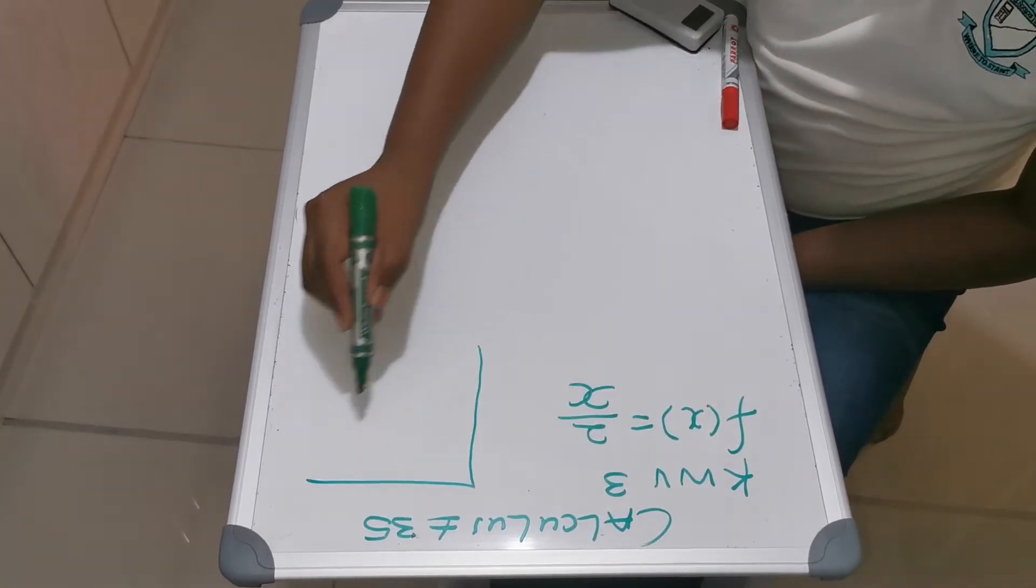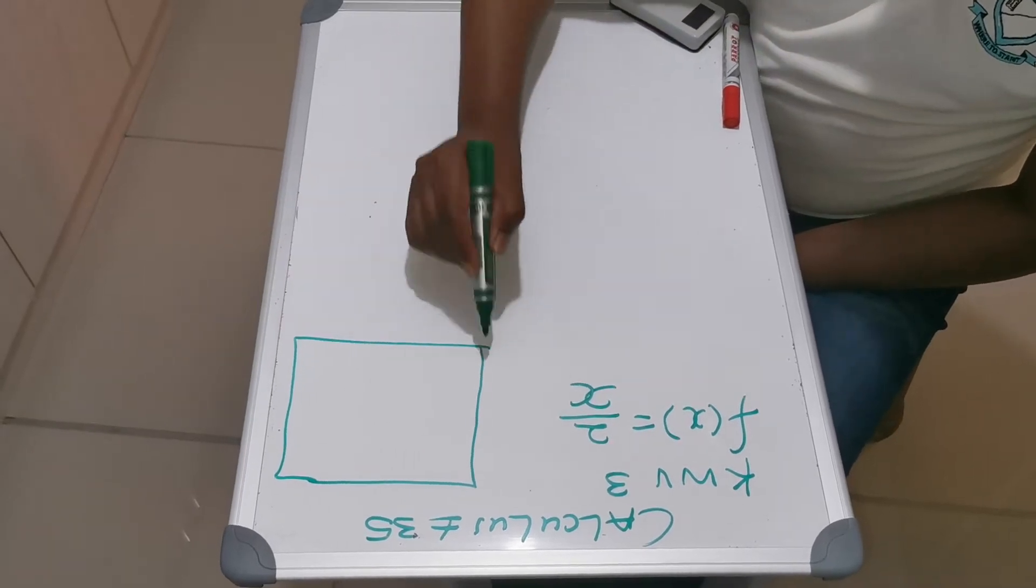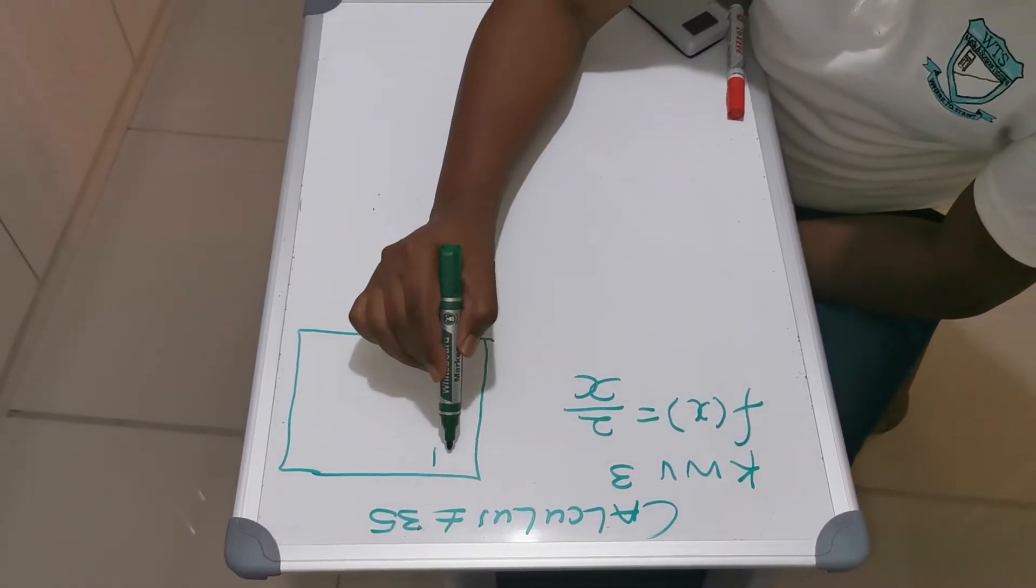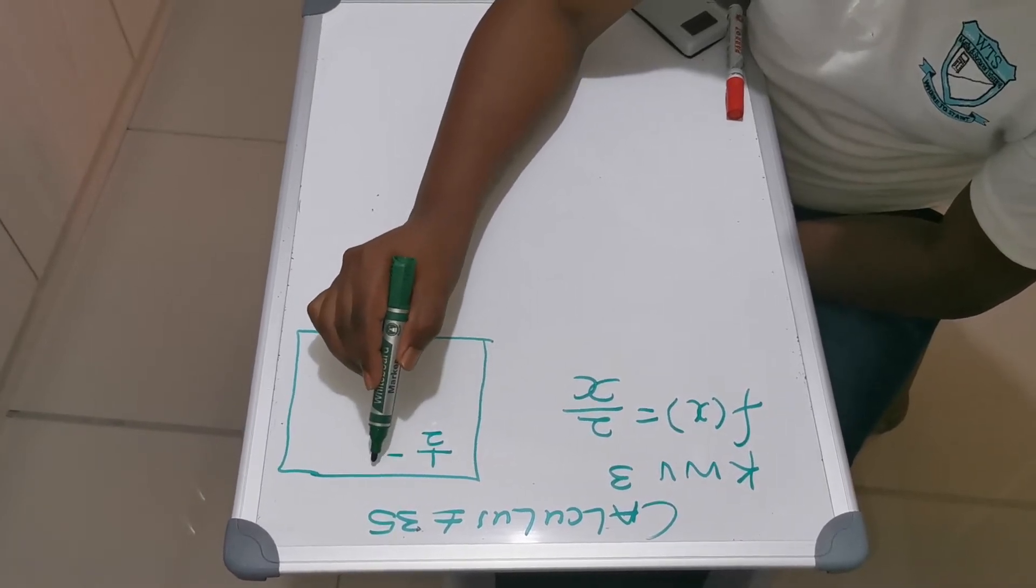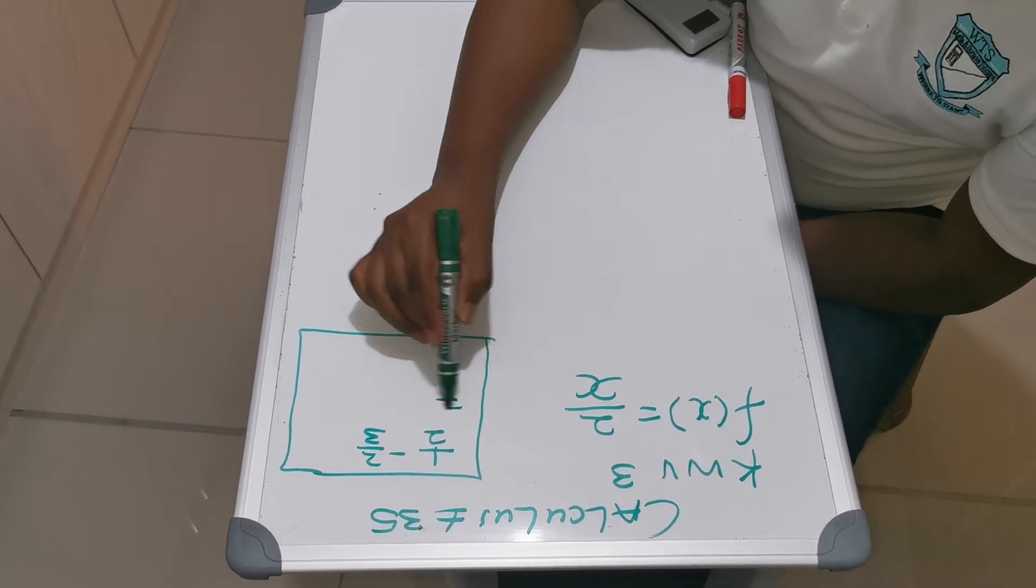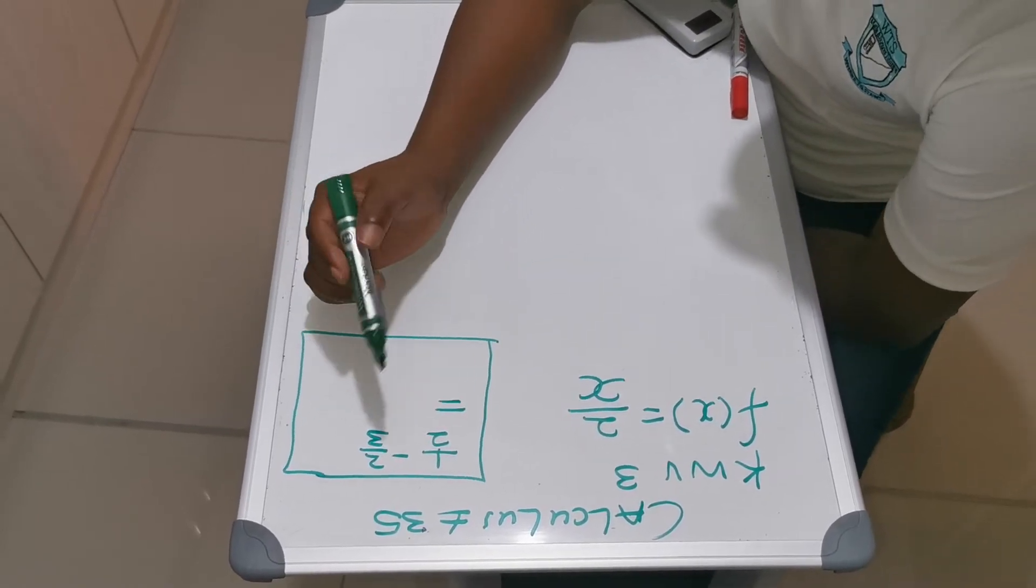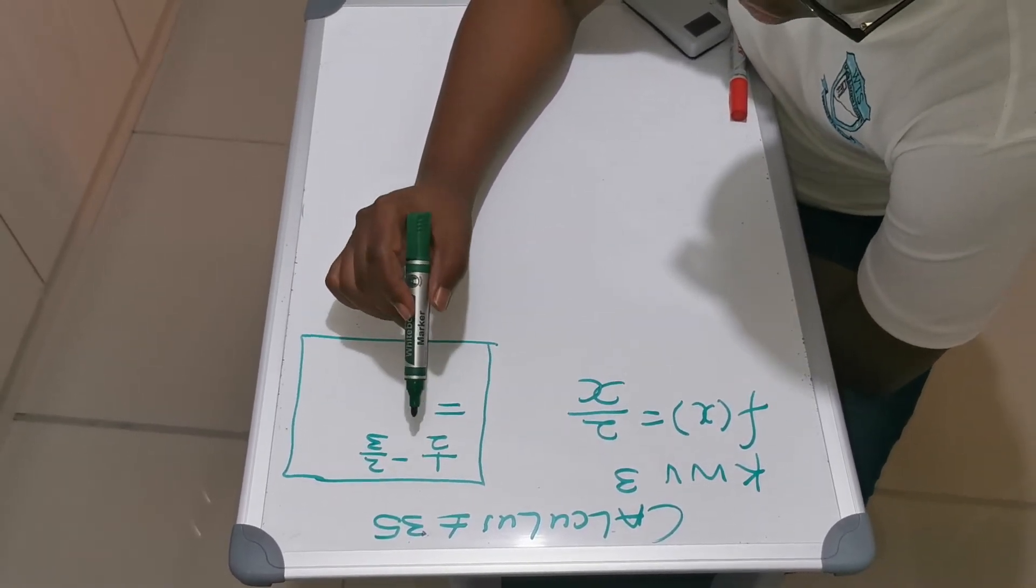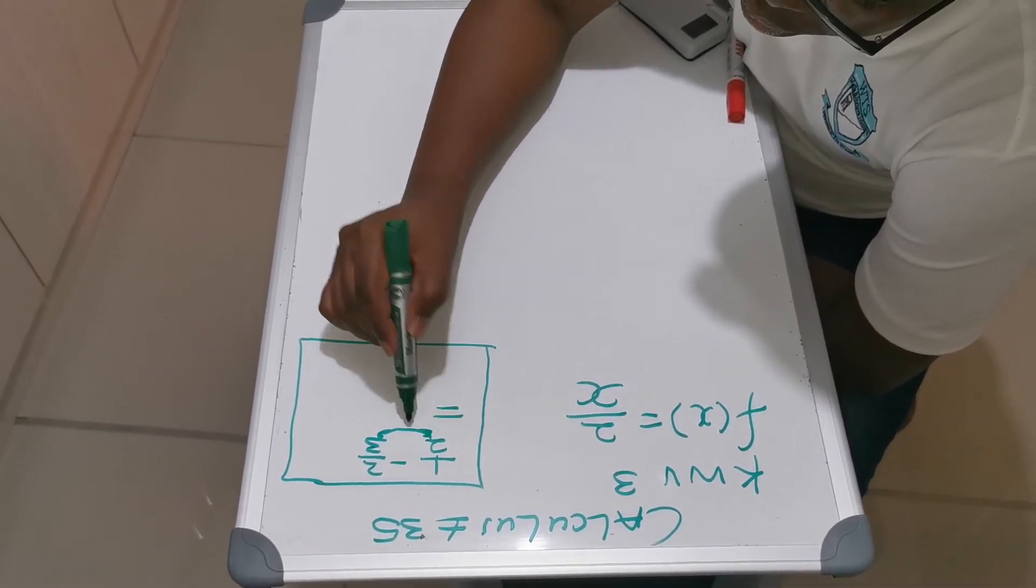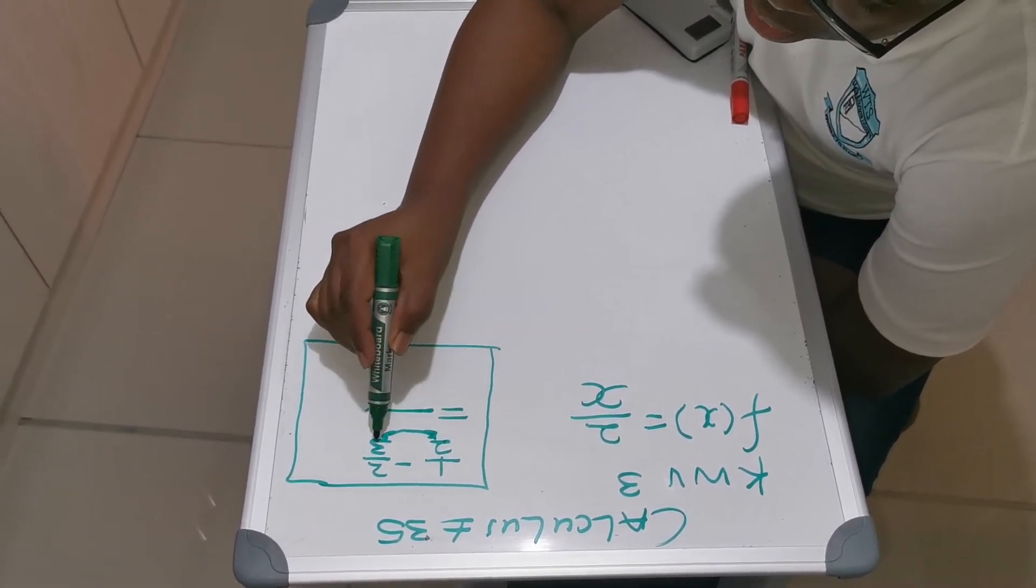Let's go back to grade 8, whereby you are given something like minus 2 over 3. What is your final answer here if the question says simplify this one? What you do is multiply these two. You say 3 times 2, this is 6.